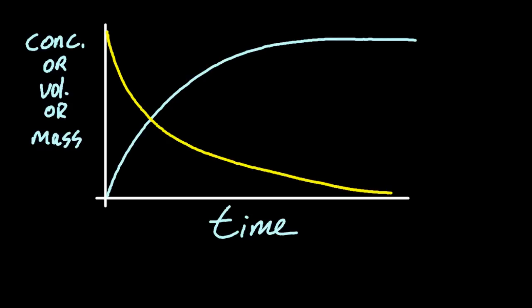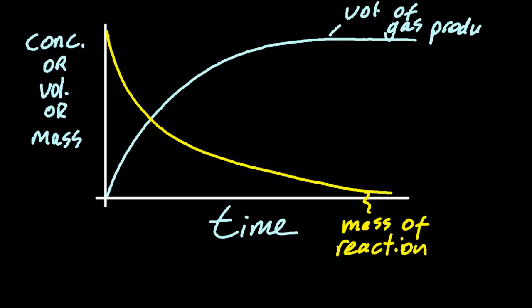Those are the two lines we're going to be looking at almost all the time. If your data keeps getting lower and lower, like the yellow line, that could be the mass of the reaction as a gas is released. And if it increases, that could be the volume of the gas produced over time. Notice they level off as the reaction is completed.